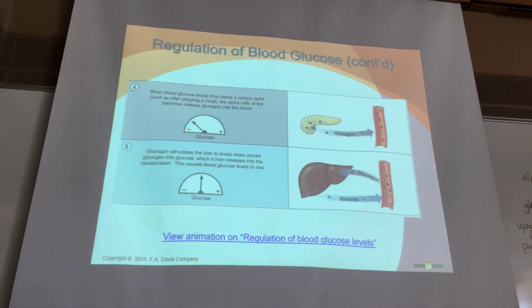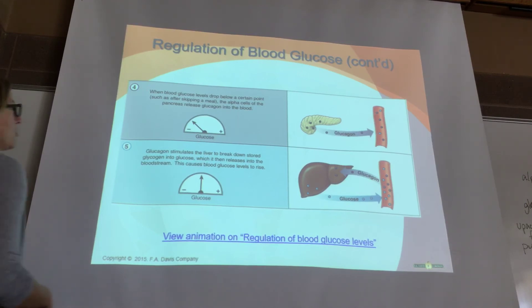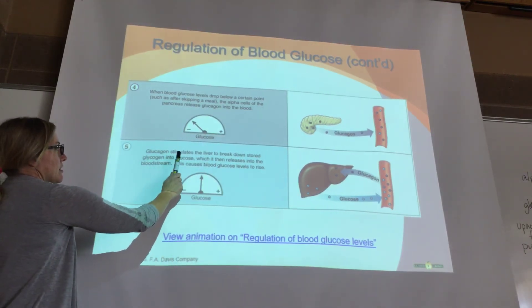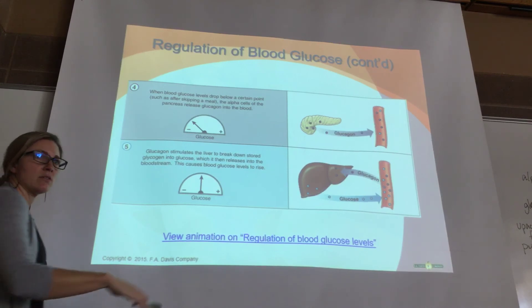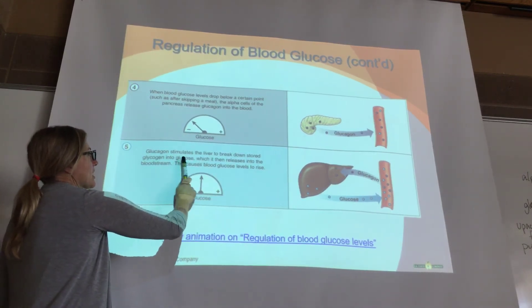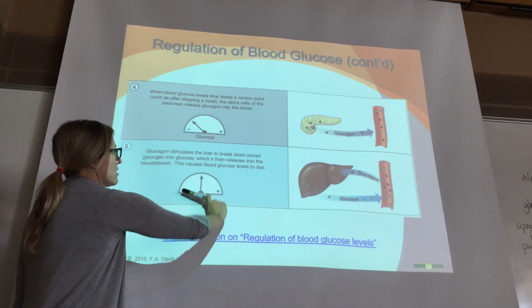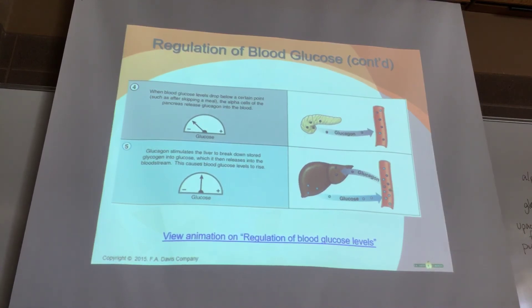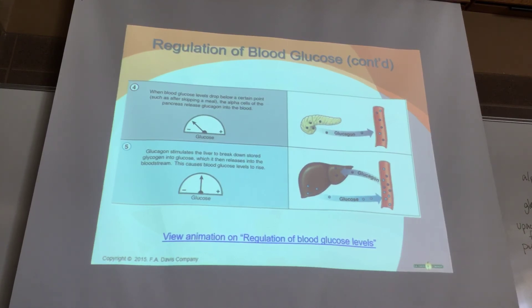When blood glucose drops—say, you haven't eaten all day—alpha cells release glucagon. Glucagon stimulates stored glucose release, typically working on the liver first, pulling that glucose out and putting it into the bloodstream to bring glucose back to homeostasis. Glucagon and insulin work together like parathyroid hormone and calcitonin do, but with glucose instead of calcium.